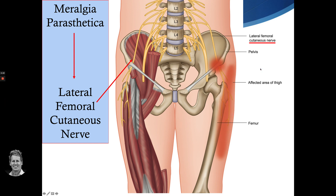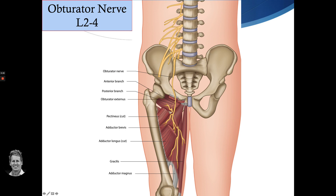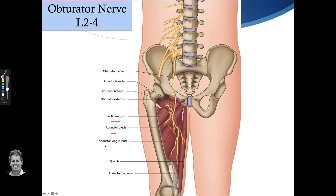Moving on to the obturator nerve, coming from L2, L3, and L4. On its way down, it supplies the obturator externus, the pectineus, the adductor muscles — the brevis, longus, the gracilis, and also the adductor magnus. Half of adductor magnus is innervated by the sciatic nerve as well.